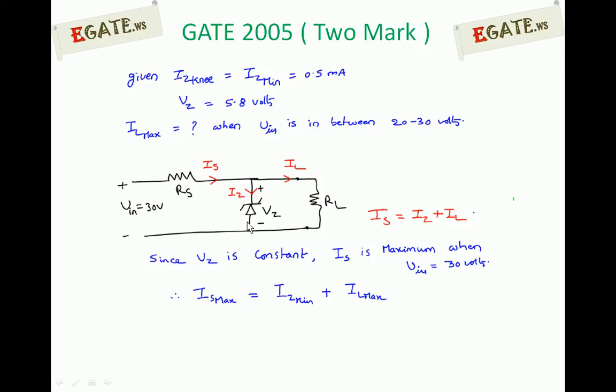Whenever it is acting as zener voltage regulator it maintains constant voltage. For this RS, one side is going to be constant, that is output voltage which is going to be constant at 5.8 volts. And current flowing through this RS now depends on V input voltage. If V input is maximum, at that time current flowing through RS will be maximum. Whenever V in is changing from 20 to 30 volts, maximum current flows through RS when V input is 30 volts. Since VZ is constant, that is one side of RS is constant, Is will be maximum when V input is 30 volts. That's why we are going with V input as 30 volts.